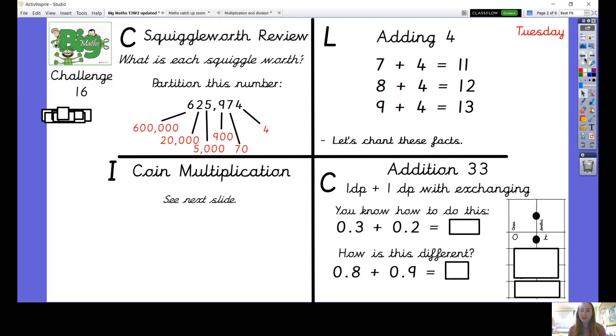Our last click skill is going to be a calculation skill and it is addition. So we're adding two numbers that have got one decimal place with some exchanging. Now this here is a skill that you have already done and I know that you can do it. So I've got here the calculation 0.3 add 0.2 and the way that we've been using to do this is we think of this as adding three and two and then we remember it's not adding three and two, it's adding three tenths add two tenths. Because I know that three add two is five, I know that three tenths add two tenths is five tenths which is the same as 0.5.